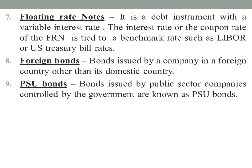Next is PSU bonds, that is Public Sector Undertaking bonds. Bonds issued by public sector companies controlled by the government are known as Public Sector Undertaking bonds. These are some of the different types of bonds.